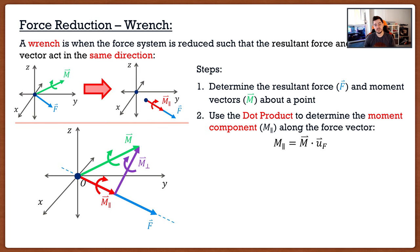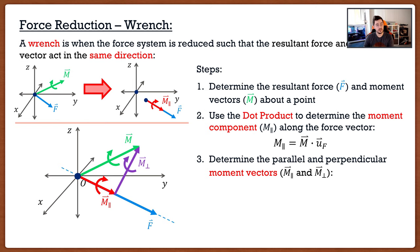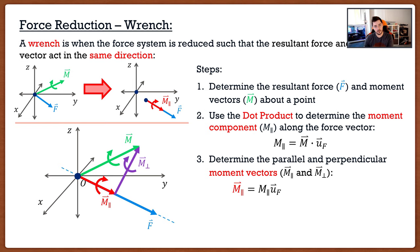So we need to find the parallel and perpendicular moment component vectors. If we know the magnitude of a vector and want it in Cartesian vector notation, we multiply it by the unit vector defining its direction. Since the parallel component goes in the same direction as the force vector, the parallel moment vector is just the magnitude of the parallel component (found by dot product) multiplied by the unit vector of the force vector. For the perpendicular component: since our moment vector equals the sum of parallel and perpendicular components, we take our moment vector and subtract the parallel component.